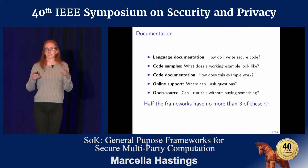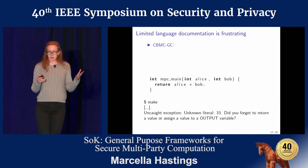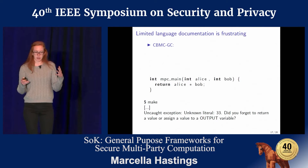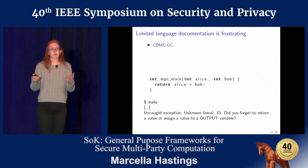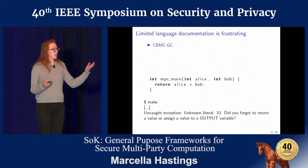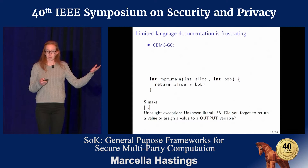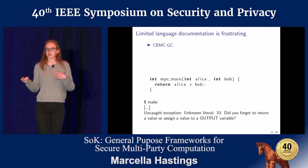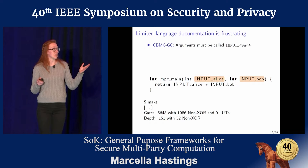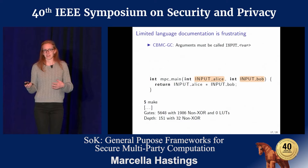Language documentation is anything that describes how the high-level language works. CBMC-GC is a circuit compiler that compiles a subset of ANSI-C. Most people are familiar with C, and you'd assume that a simple program that multiplies two numbers together would just work. However, we get an error that says 'did you forget to return a value?' It turns out that in CBMC-GC, all private inputs to the computation have to have variable names that start with 'input.' This isn't a big issue, but it wasn't written down, so we had to figure it out.